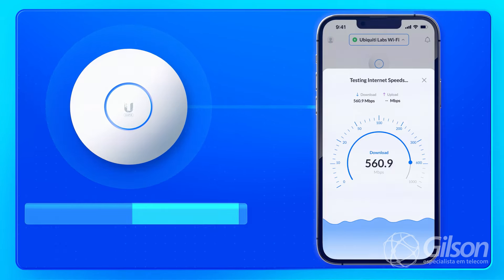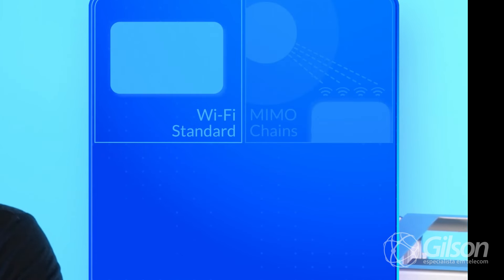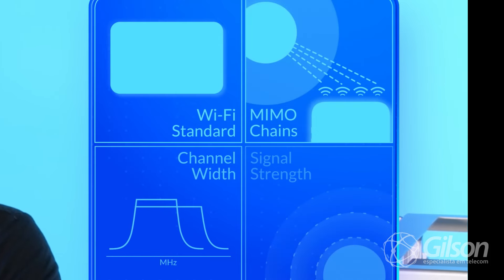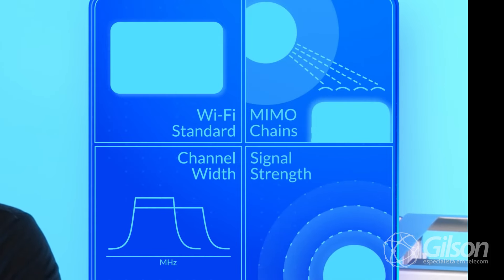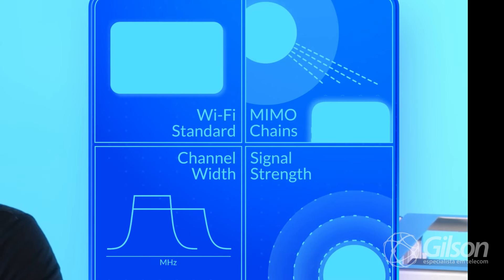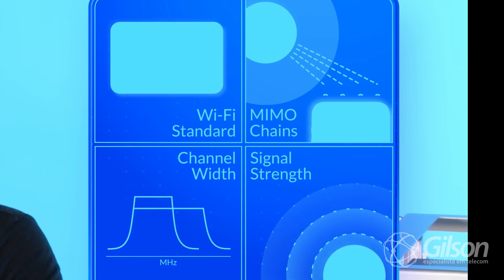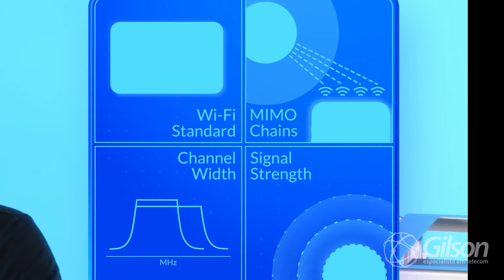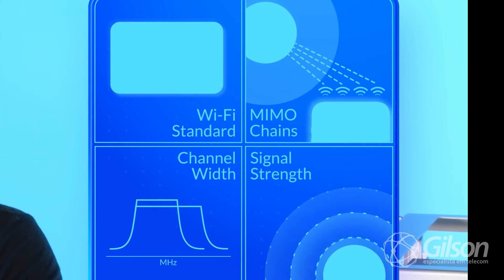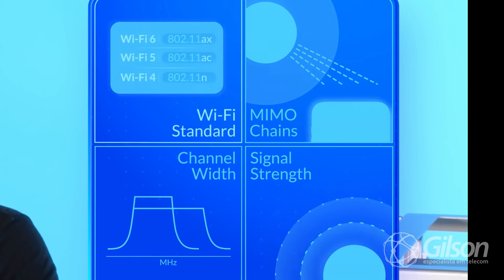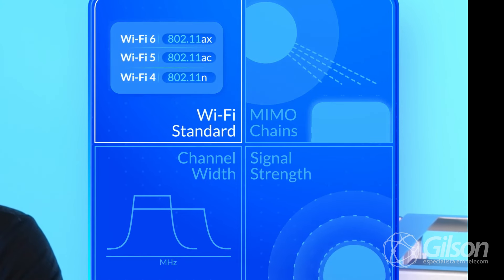Isso vale para via rádio, para access point empresarial e muito mais. As formas que a gente tem de melhorar a rede Wi-Fi são quatro, que vão impactar na velocidade que você tem daquele link. A primeira é o padrão do Wi-Fi que você está utilizando. Dependendo do padrão, você tem um maior QAM — uma taxa maior de quadros que você consegue transmitir dentro da mesma frequência.